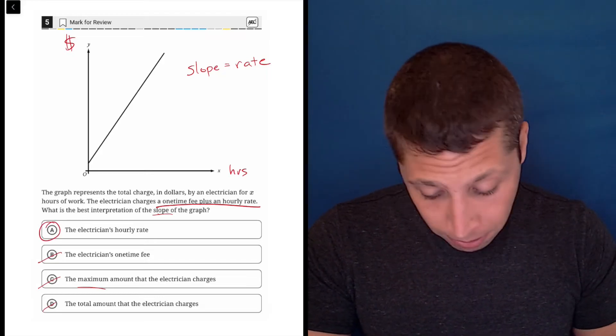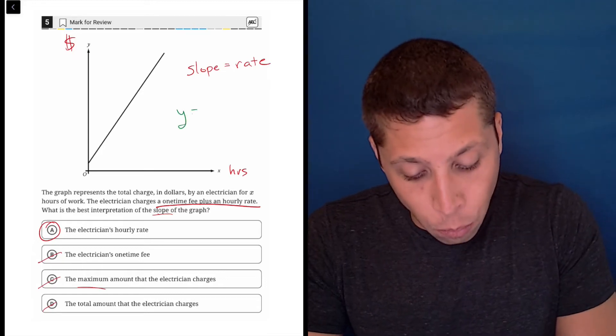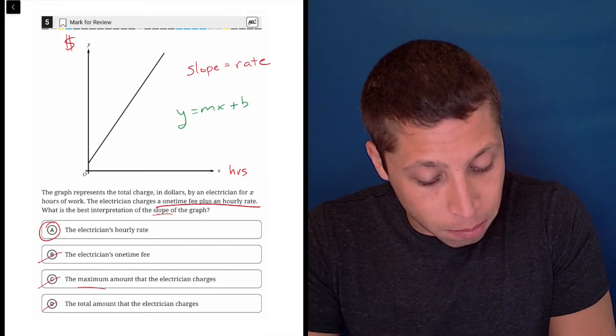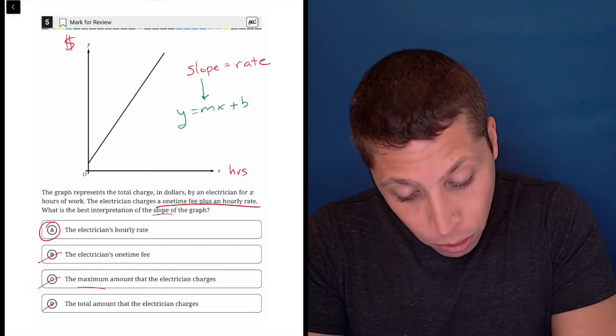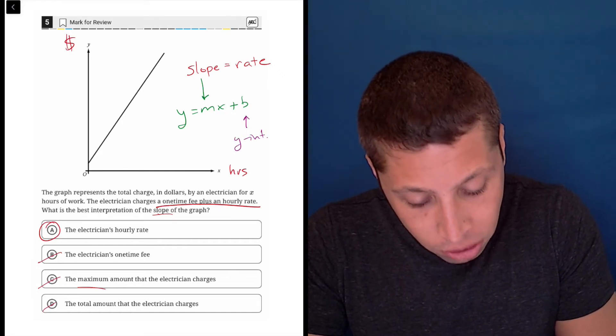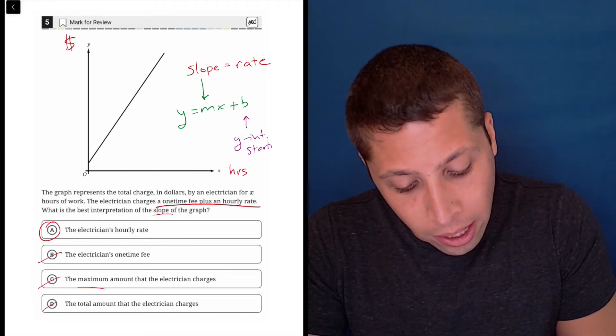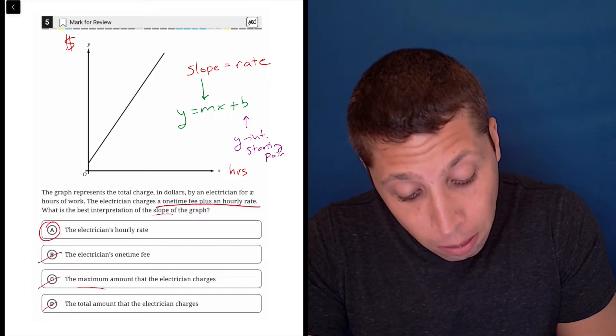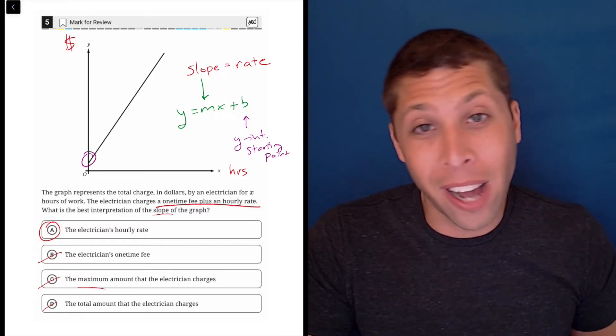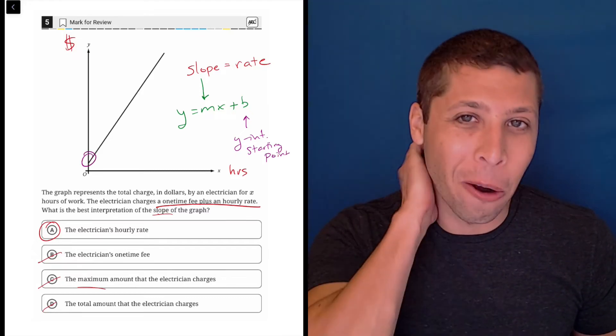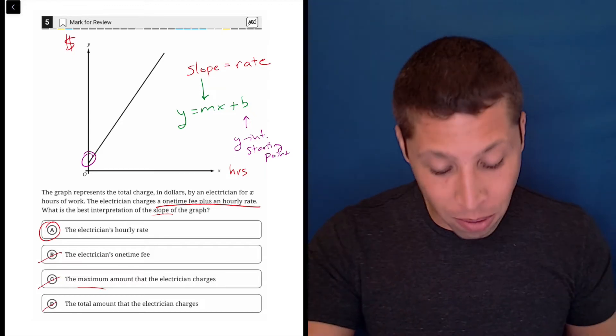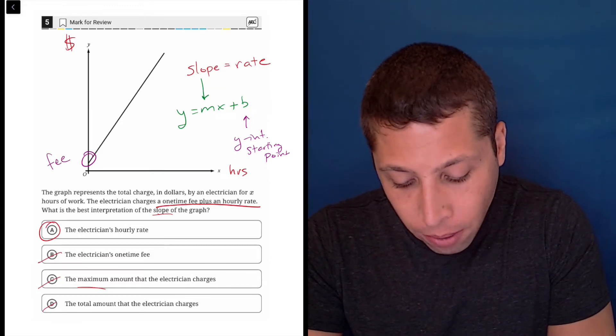Just to dive a little deeper, the other part of a Y equals MX plus B line. So we have the slope. We also have the B, which is the Y intercept. And that in a story is going to sound like a starting point because most stories do not have negative numbers for the X. So we're going to have a start at zero. And in this case, that would be represented by the fee, right?